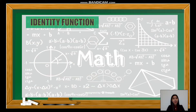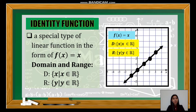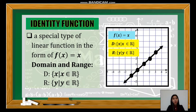Under the linear function, we have the identity function. It is a special type of linear function in the form f(x) = x. That is why it is called identical — if x is 1, y is 1; if x is 2, y is 2. The domain and range are both the set of real numbers. As we can see on this graph, it is a slanting line rising to the right, and the x and y values are the same, like (2,2), (3,3), (−1,−1).